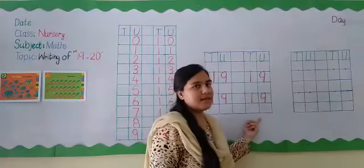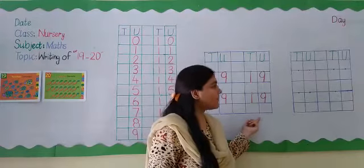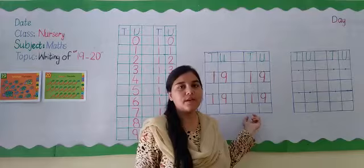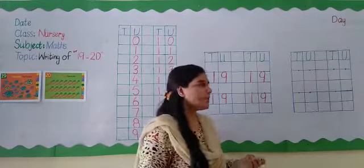So students, which number did we just write? 19. The next number is 20. How do we write 20? 2, 0 makes 20.